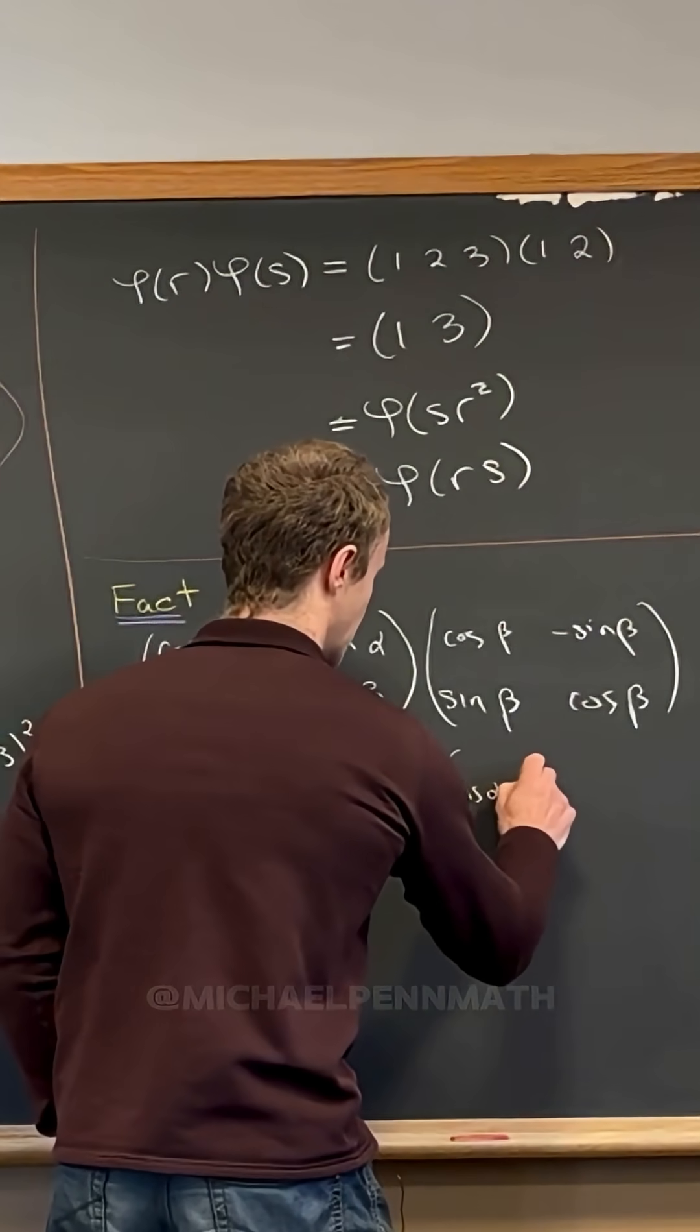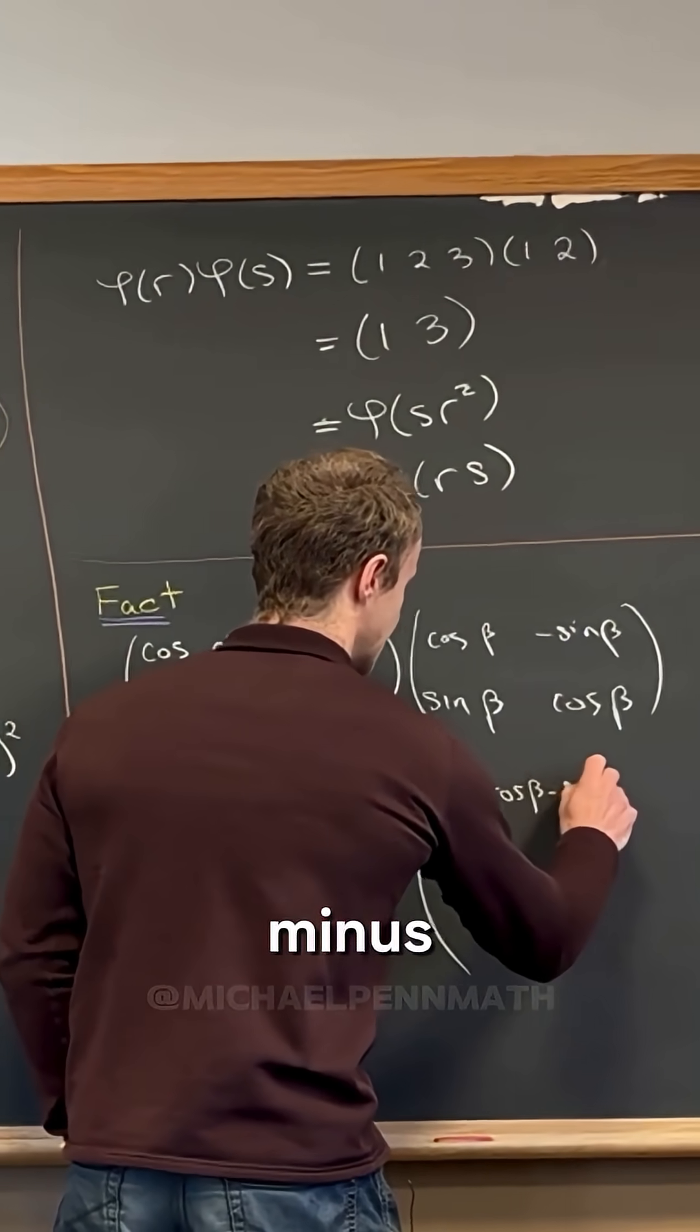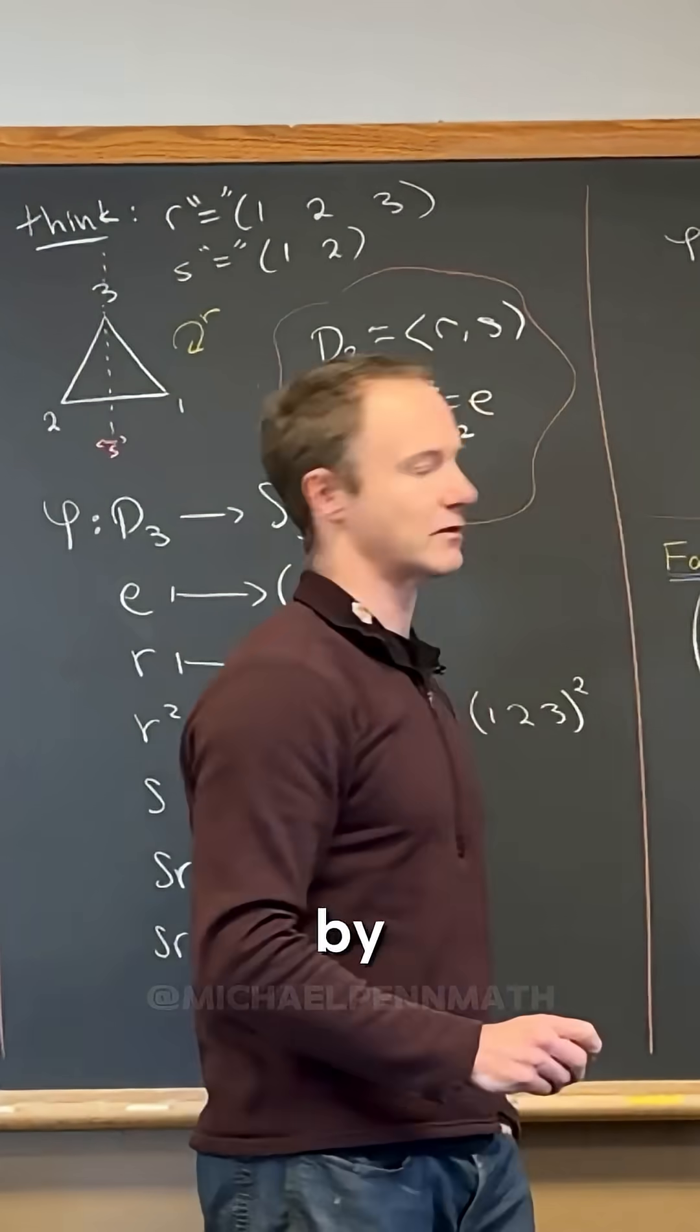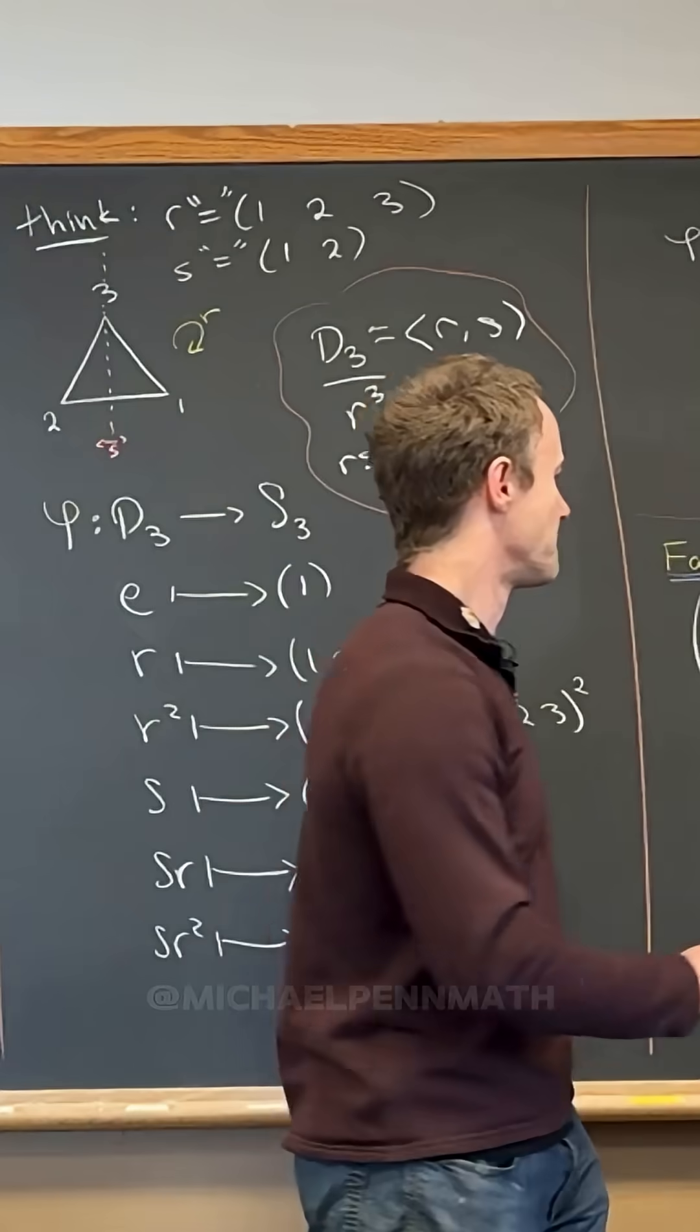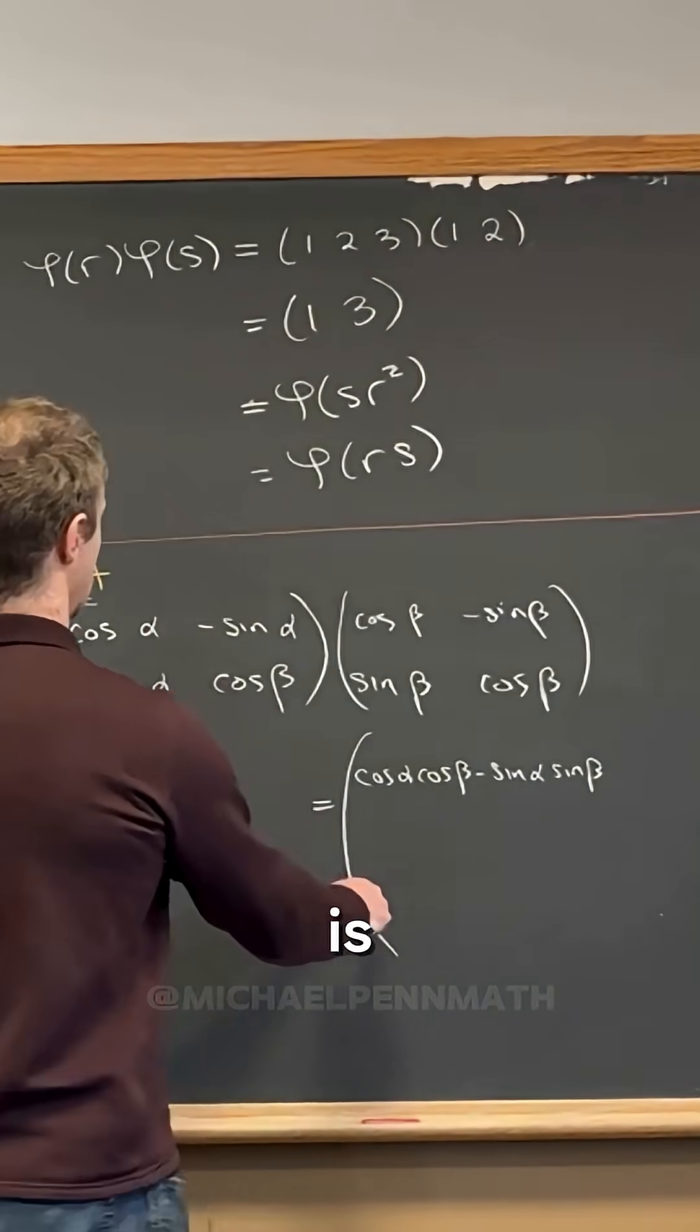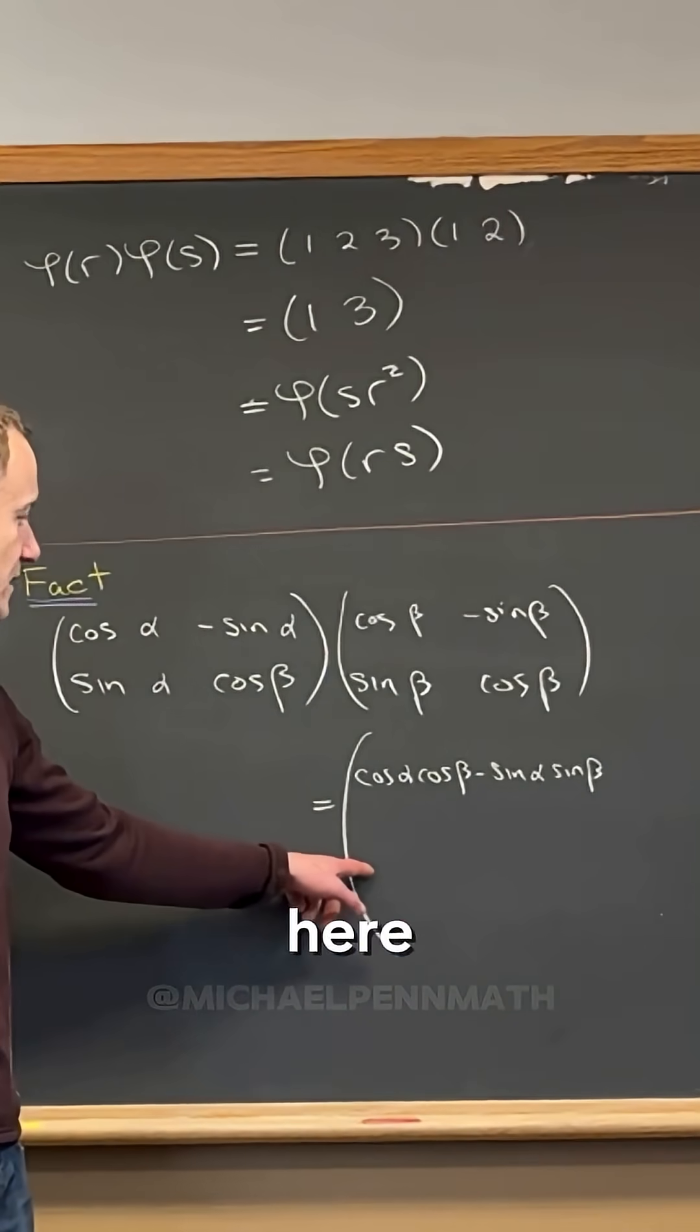right here is cosine alpha cosine beta minus sine alpha sine beta, right, by rules of matrix multiplication. By rules of matrix multiplication, this entry right here is what? What's the entry right here?